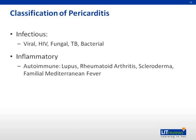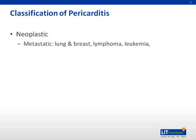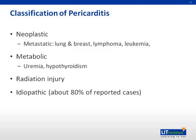Pericarditis is also seen with inflammatory diseases, especially autoimmune disease like lupus, rheumatoid arthritis, scleroderma, and familial Mediterranean fever. Some primary cardiac diseases, including myocarditis and post-cardiac injury syndrome — classically called Dressler syndrome — which is pericarditis following a large heart attack or cardiac surgery. Neoplastic causes such as metastatic lung and breast cancer and lymphoma can also cause pericarditis, usually with a pericardial effusion. Rarely, metabolic diseases like uremic pericarditis and hypothyroidism have been described, as has radiation injury. Overall, about 80% of reported cases fall under the idiopathic category.